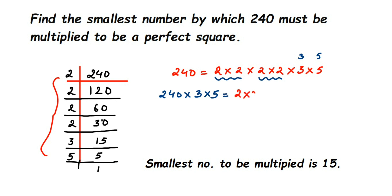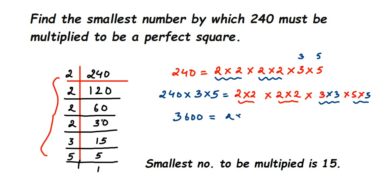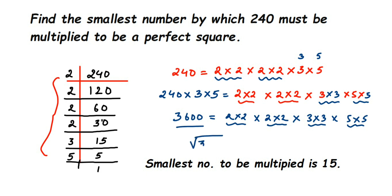Looking at the factors: 2 × 2 is already paired, and the next 2 × 2 is already paired. Now we add the additional 3 and the additional 5, giving us a pair of 3s and a pair of 5s. So 240 × 15 = 3600 = (2×2) × (2×2) × (3×3) × (5×5). You can see that all factors are in pairs, which means 3600 is a perfect square.